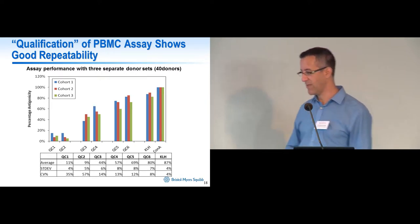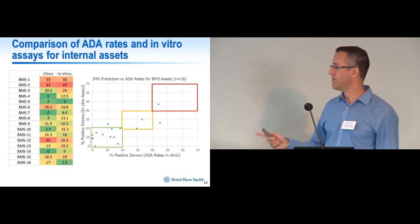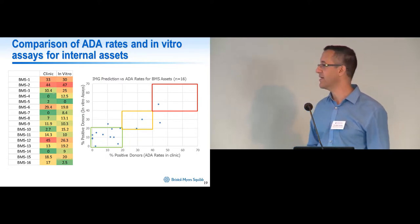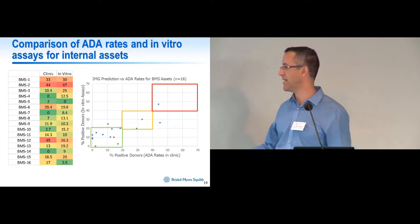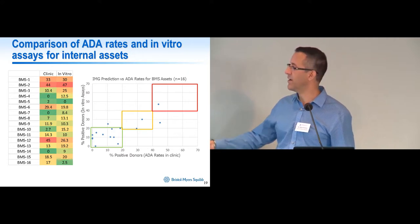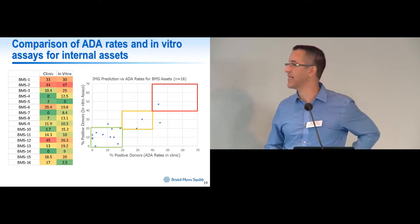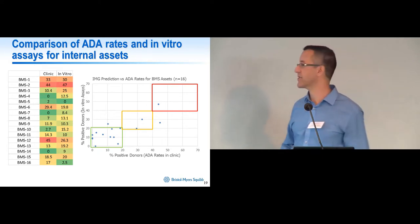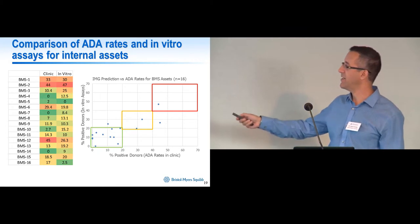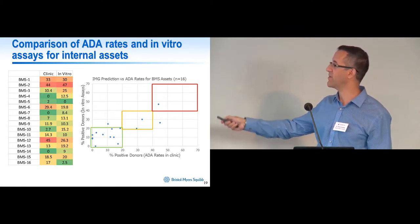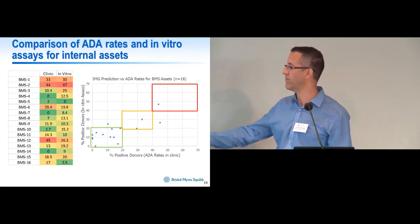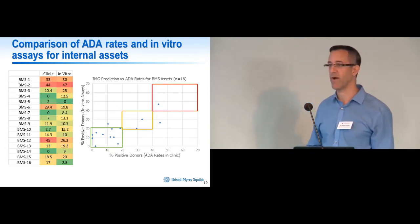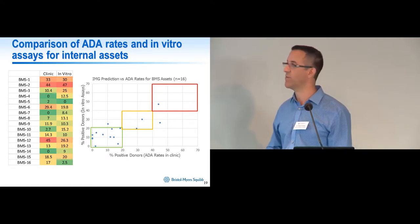We've also tried to see how well we correlate to immunogenicity in the clinic. This recent slide shows 16 different BMS assets that have actually been put into the clinic. The x-axis is the percentage of positive donors showing ADA in the clinic, and the y-axis is combined data from the PBMC and DC assays with percent positive donors in those assays. For the most part we see a pretty nice correlation, with a couple of outliers. We classify anything greater than 40% as high risk, between 20 and 40% as medium risk, and under 20% as low risk. This is a work in progress but we are doing a decent job identifying which ones may have risk.